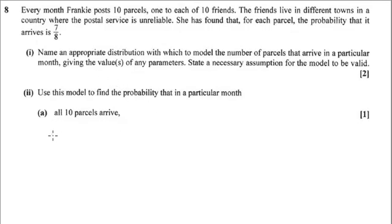Okay, so part two then says, using this model, so using X is binomial where n is 10 and p is 7/8, find the probability that all 10 parcels arrive safely. So probability that X is equal to 10, if they are all going to arrive safely, that's going to be 7/8 times 7/8 times 7/8, so (7/8) to the power of 10.